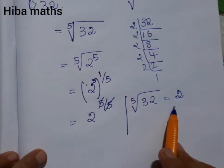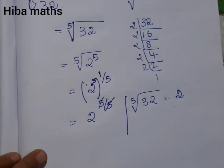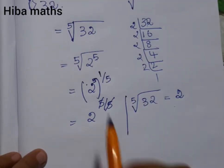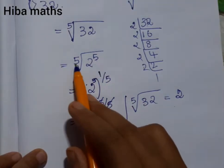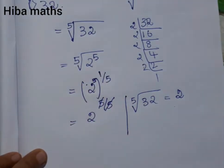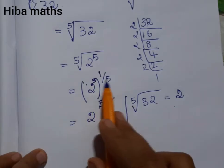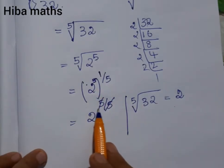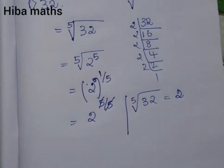We can write 32 as 2 to the power 5. Taking the 5th root gives us the exponent 1 by 5, so 5 by 5 cancels and the 5th root of 32 is 2. It's very simple.